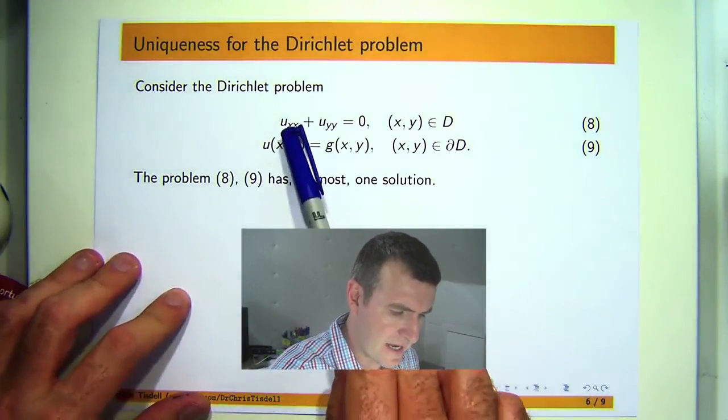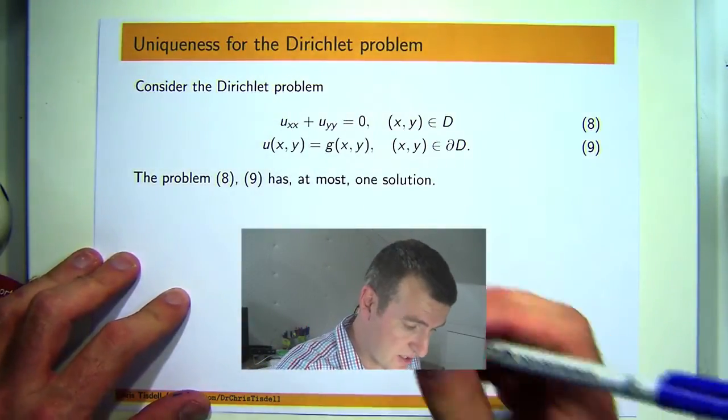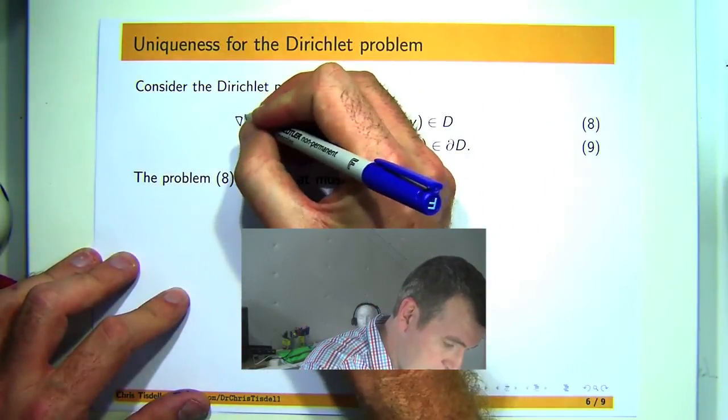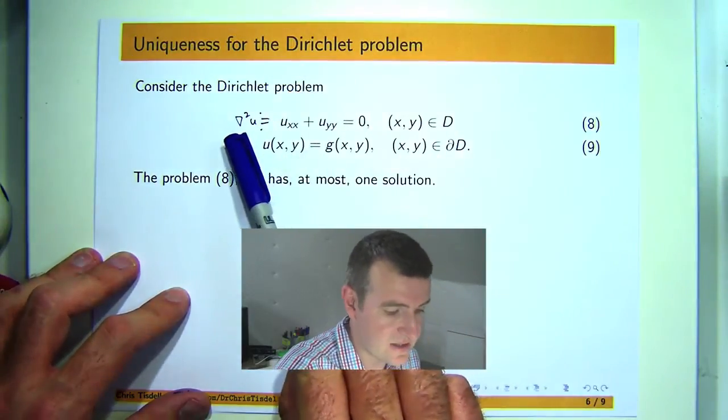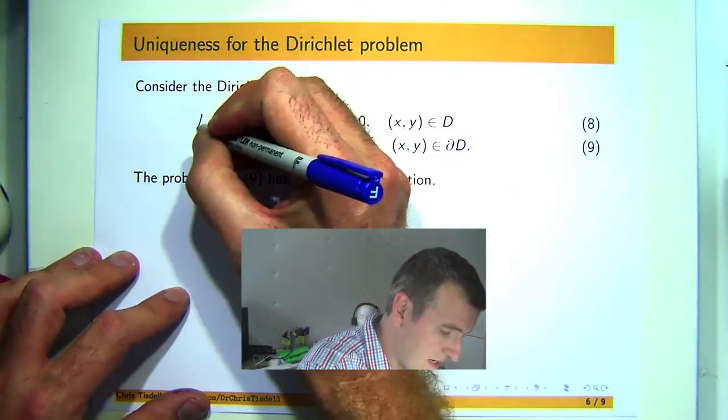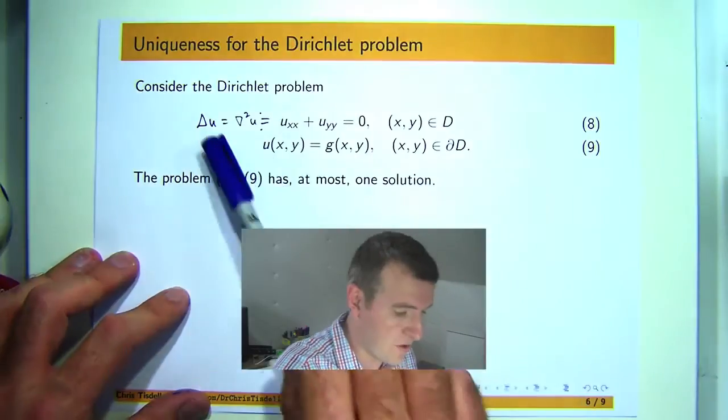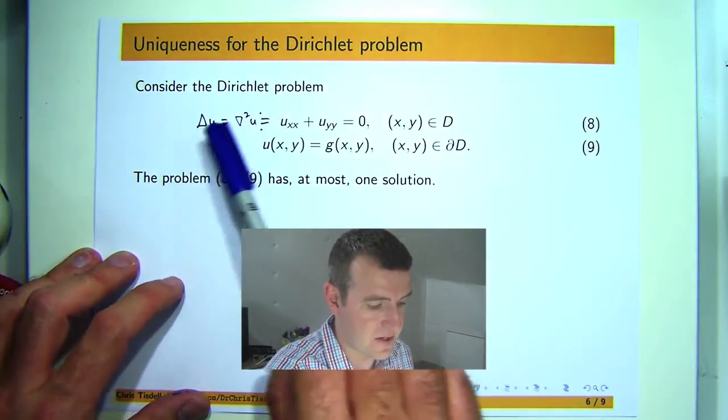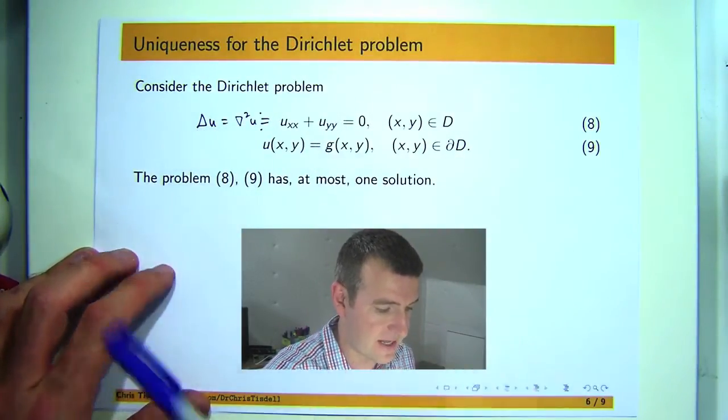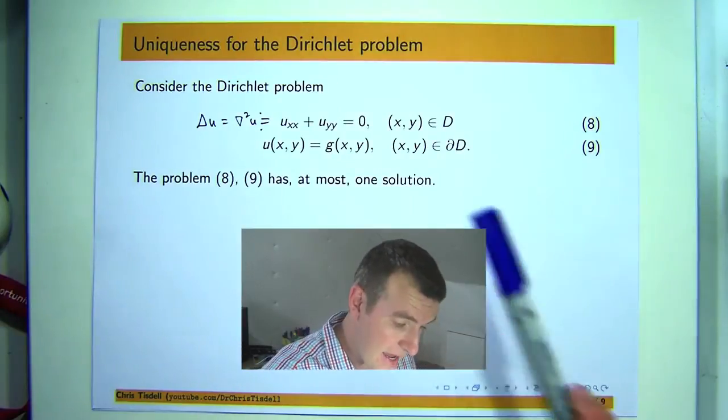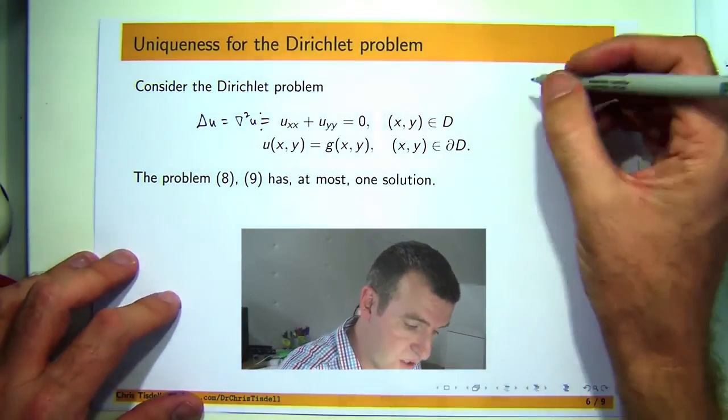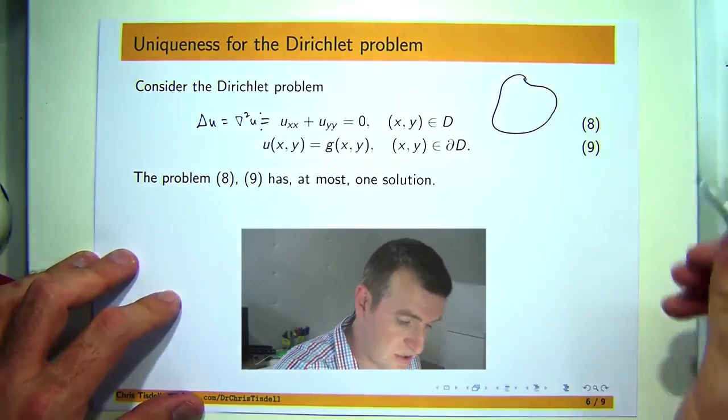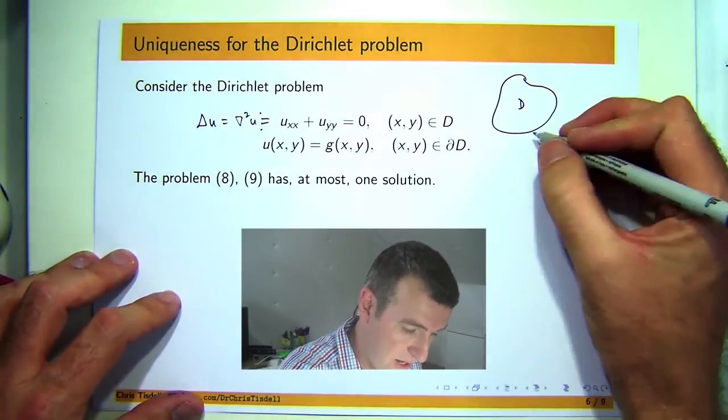Now we've got a partial differential equation known as Laplace's equation. Sometimes the notation is abbreviated to this nabla squared or this delta u, both types of notation are used to abbreviate this left-hand side. And we've also got some information about the solution u on the boundary of this two-dimensional region. So here we're just working in the plane.